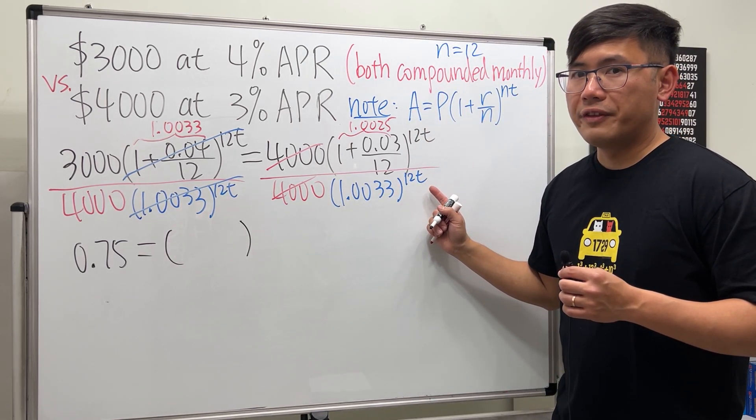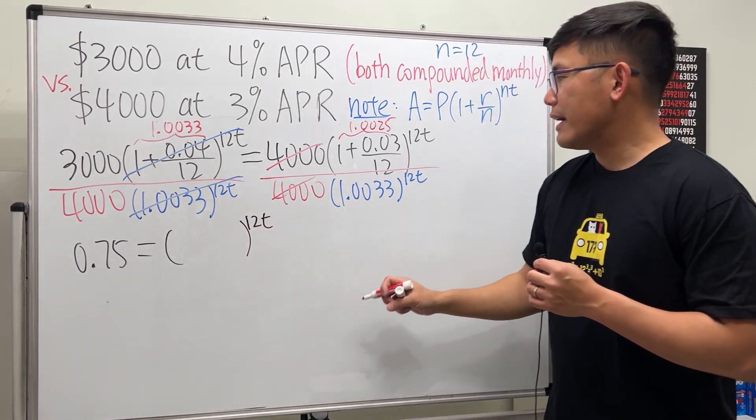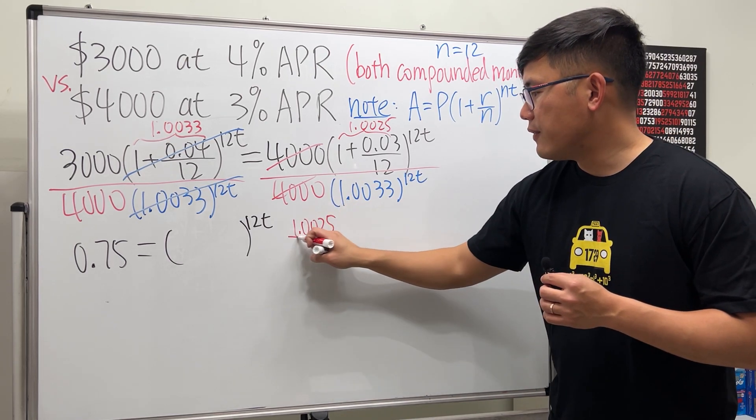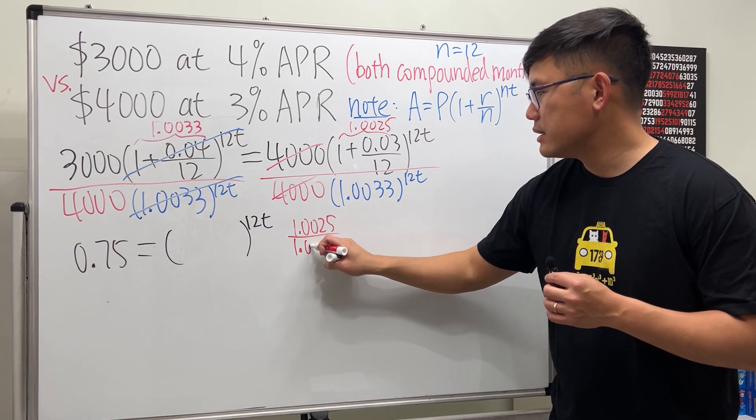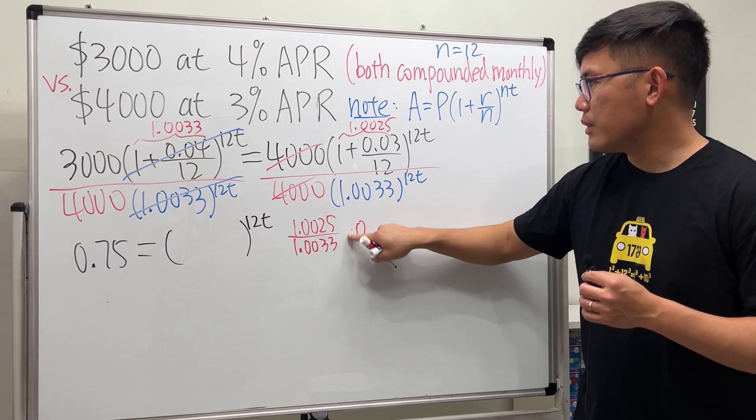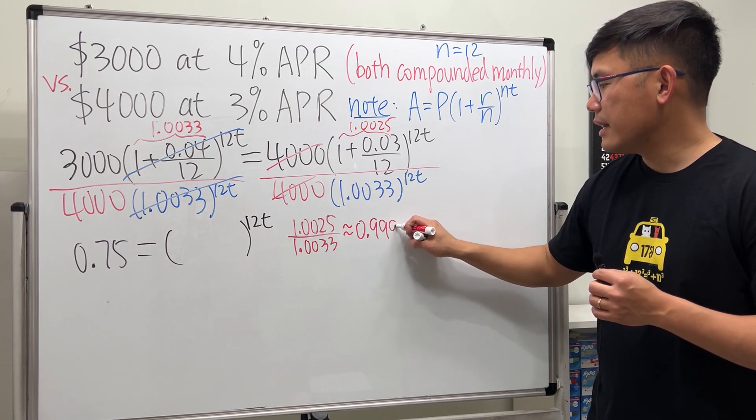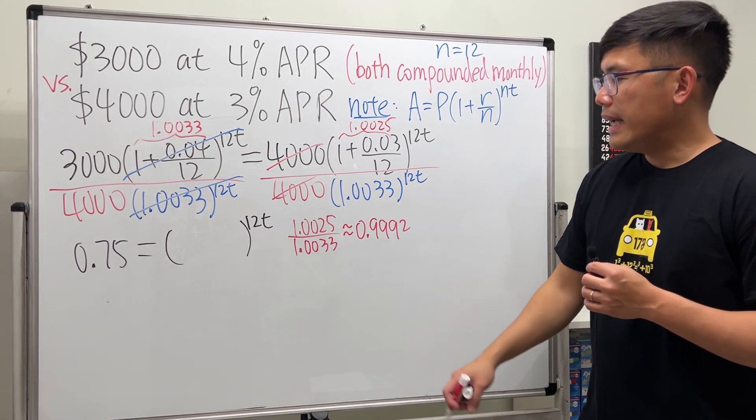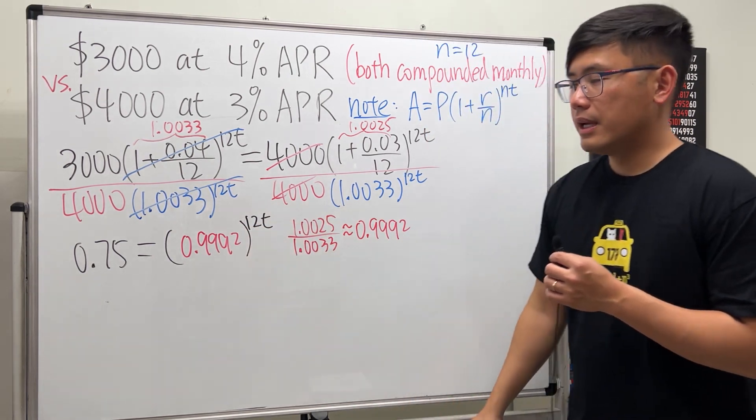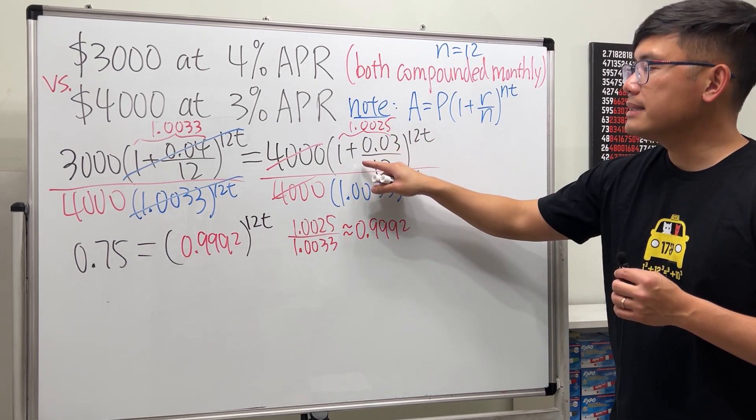On the right hand side, because both of them are raised to the 12t power, we can still maintain the 12t power. For the inside, we just have to work out 1.0025 divided by 1.0033, and that will be approximately 0.9992. We can put this number inside: 0.9992 raised to the 12t power.